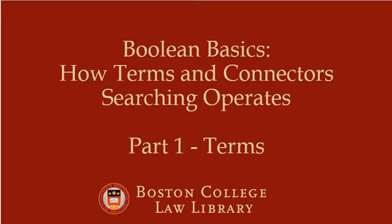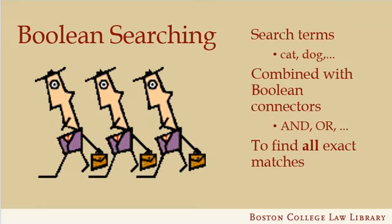Boolean Basics – How Terms and Connector Searching Operates. Boolean searching is a type of search which uses terms such as cat or dog, which are combined with Boolean connectors like AND and OR, to find all exact matches of your search statement. Boolean search engines are used in legal research because they provide greater precision and accuracy than other types of searches.